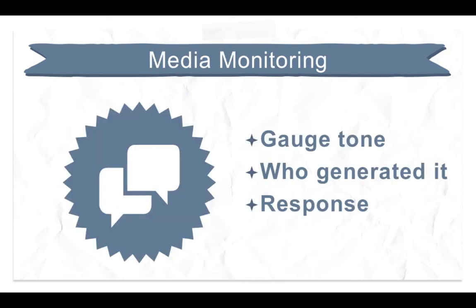Another important part of research you must do before and during your campaign — to know if your efforts are working — is monitoring the output of print, online, and broadcast media about your issue. It should be done by an unbiased media monitoring person or company. They will systematically record radio and television broadcasts, collect press clippings from print media, and gather data online, looking for media output that references your organization, campaign, or issue, then gauge whether the tone is positive, negative, or neutral, and whether your campaign generated it or not.